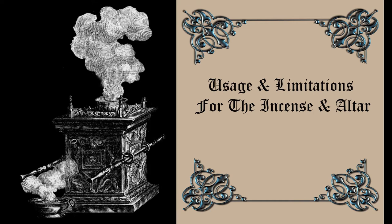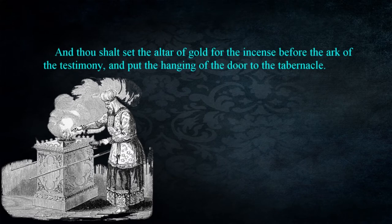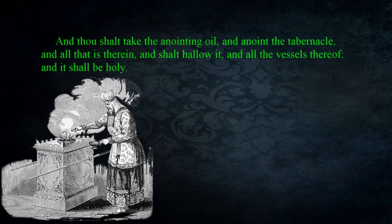The altar of incense was holy as were the other objects in the tabernacle. On the day the tabernacle was set up, the altar was to be put in the holy place. God told Moses, 'Thou shalt set the altar of gold for the incense before the ark of the testimony and put the hanging of the door to the tabernacle' — Exodus 40:5. The altar was also to be sanctified: 'Thou shalt take the anointing oil and anoint the tabernacle and all that is therein and shalt hallow it and all the vessels thereof and it shall be holy' — Exodus 40:9. God then provided instructions on how the altar of incense was to be used.